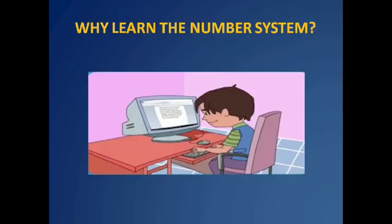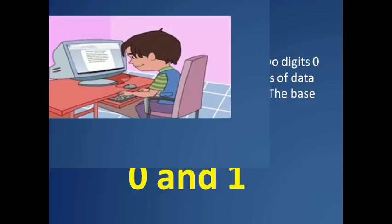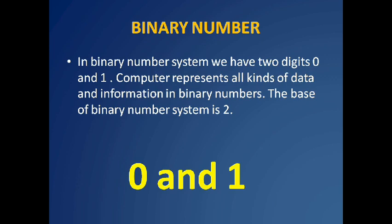While using number systems, humans speak in a particular language made of words and letters, and we type words and letters into the computer. However, the computer does not understand words and letters; rather, those words and letters are translated into numbers. The computer understands only binary numbers. In the binary number system, we have two digits: 0 and 1.